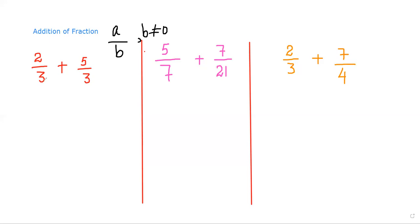In the first example, the denominator here is 3 and here is also 3, so they are the same. We write the denominator one time and just add the numerators: 2 plus 5 is 7. After this we check if we can simplify further, but 7 over 3 is already in simplified form, so that is our final answer.